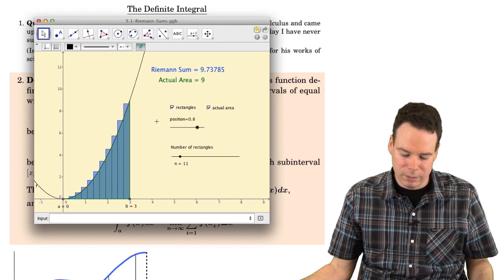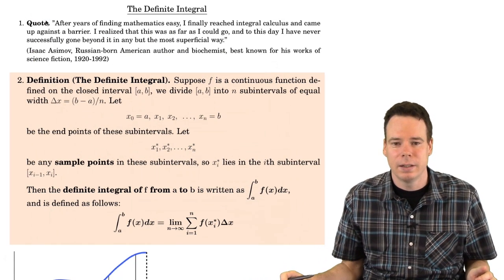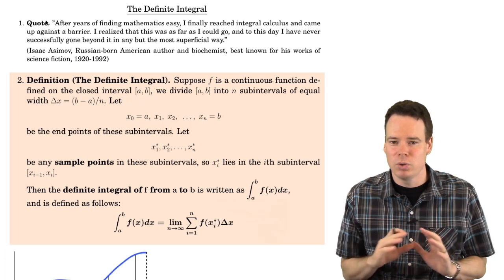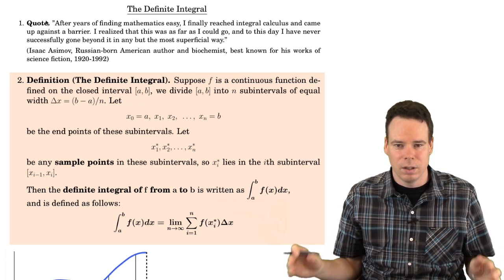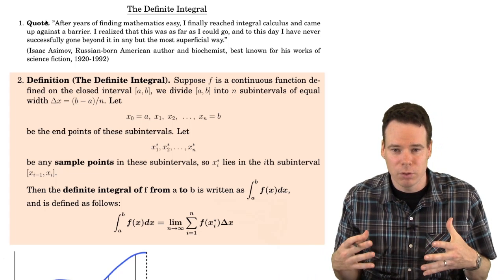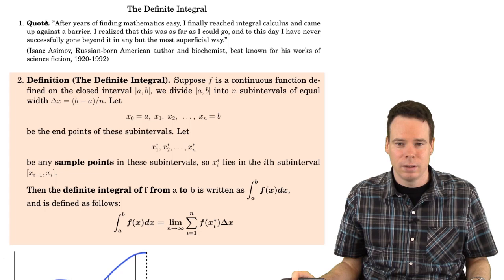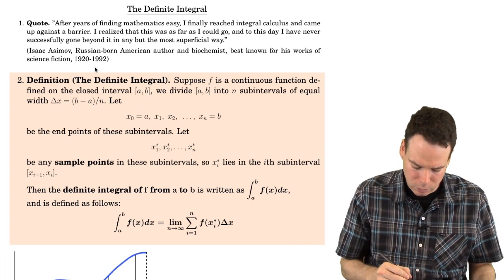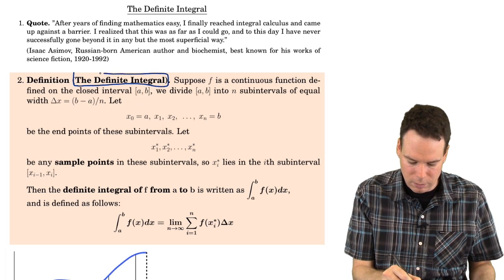This process of slicing, summing, and then taking the limit as the number of slices goes to infinity is something we do so frequently in math and science that it's given a general name. The numerical value that comes out of this process is known as the definite integral. So that's what we're going to define here: what is the definite integral?